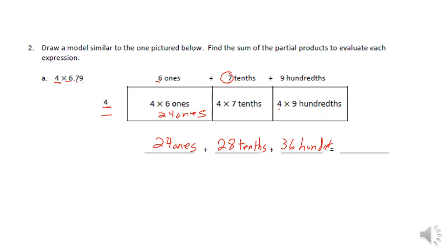So now if I were to do my place value chart, I know I got 24 ones, 28 tenths is going to be two and eight tenths, because the eight is in the tenths place. And 36 hundredths, I know the six is in the hundredths place. So we're going to end up with zero and the six in the hundredths place. So all these are being added together. So I can see I have 24, and I have two and eight tenths, and I have zero and 36 hundredths.